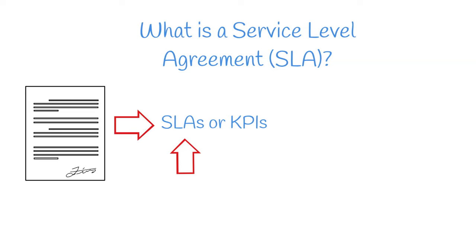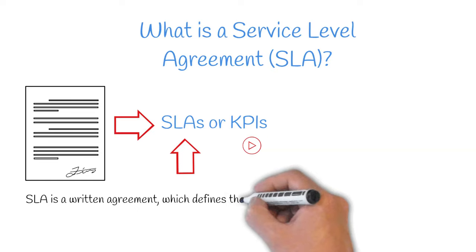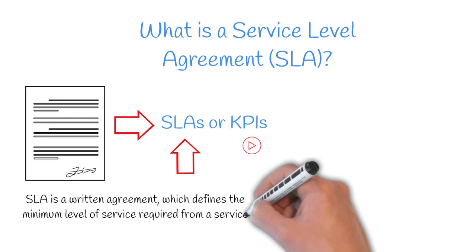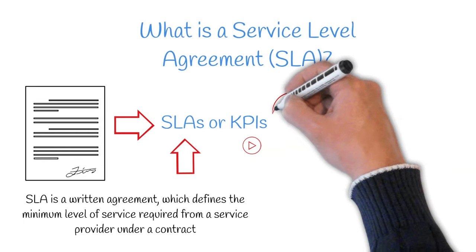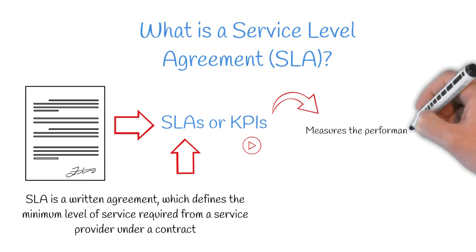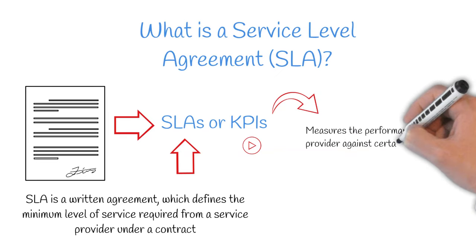However, if you'd like to learn more about KPIs, check out the video we made on this subject on our channel. An SLA is a written agreement which defines the minimum level of service required from a service provider under a contract. This differs from KPIs, which measures the performance of a service provider against certain targets.